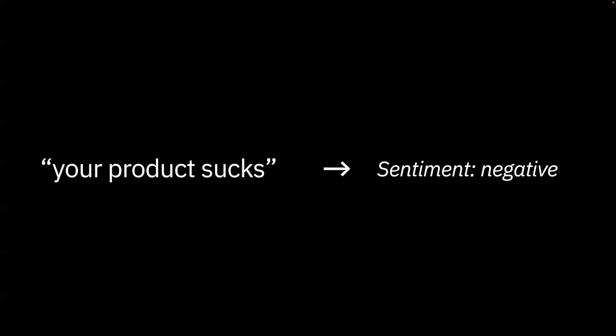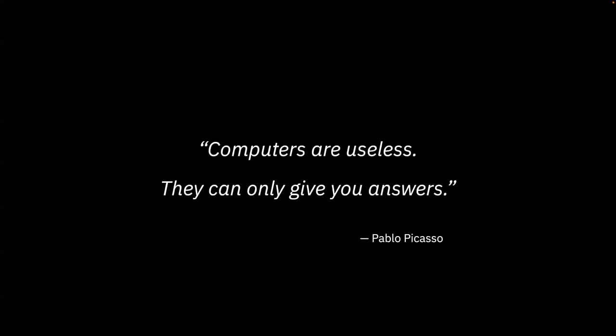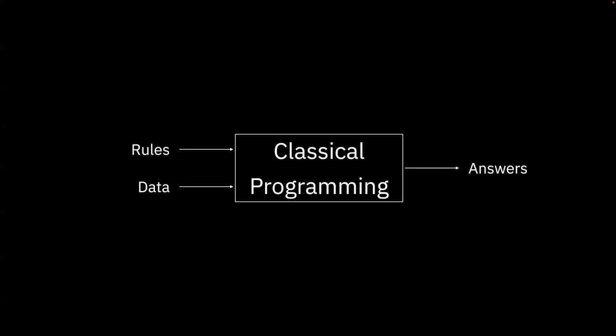To understand how we get there, we have to understand how AI training works. I love this quote by Picasso: 'Computers are useless — they can only give you answers.' He was actually talking about calculators, but the rules have shifted. The basic model: in classical computer systems, you take rules and data and produce answers — like a tax calculation. That's the classical model of programming.